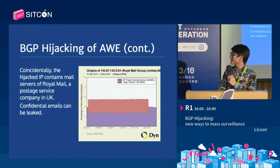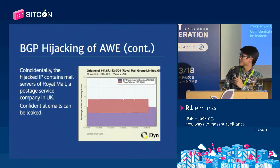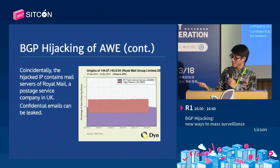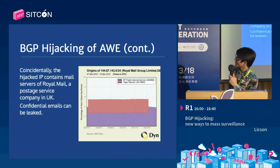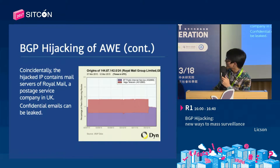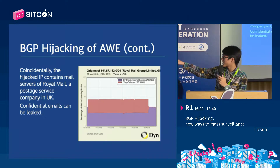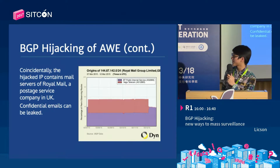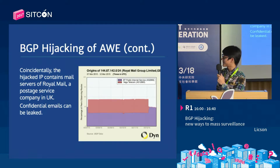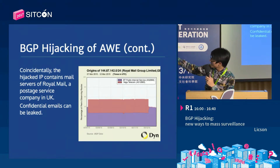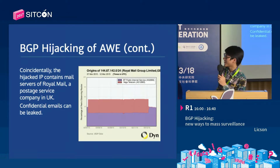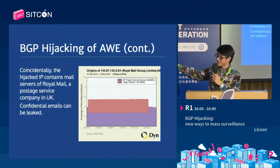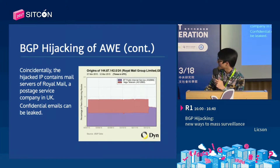FEGA may be doing data inspection in between and may even be stealing the data that AWE tries to communicate. The hijacked network actually contains the mail server and VPN gateway of the research firm, and serious confidential emails could be leaked. The hijacked IP space also contains the mail service of Royal Mail, a postal service company in the UK, so confidential emails of other organizations may also be leaked. From the graph, you can see that FEGA only takes up half of the traffic during the hijack period - a clear example that BGP hijacking is not always effective, with only about 50% of internet traffic going through FEGA.